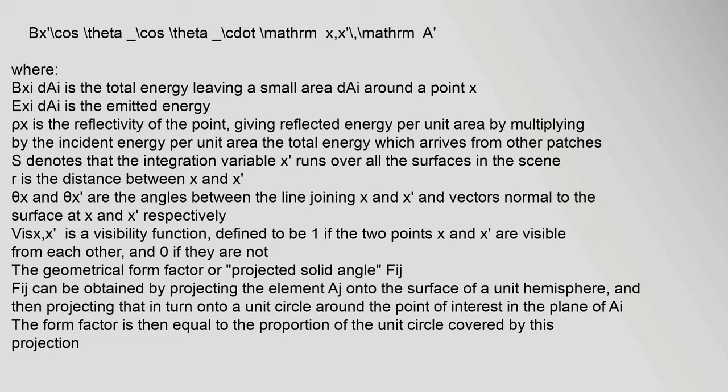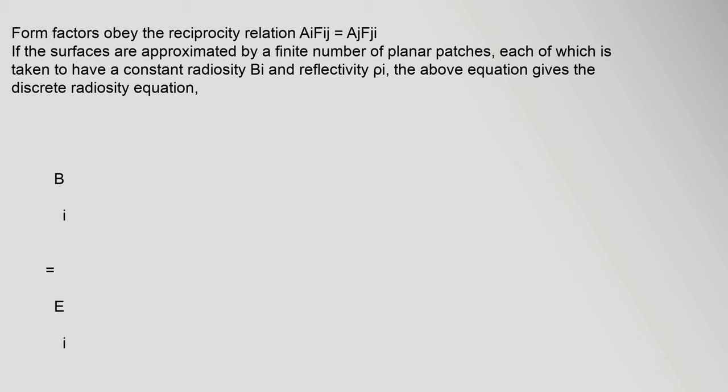The geometrical form factor F_ij can be obtained by projecting element A_j onto the surface of a unit hemisphere and then projecting that in turn onto a unit circle around the point of interest in the plane of i. The form factor is then equal to the proportion of the unit circle covered by this projection. Form factors obey the reciprocity relation A_i F_ij = A_j F_ji. If the surfaces are approximated by a finite number of planar patches each taken to have constant radiosity B_i and reflectivity ρ_i, the discrete radiosity equation is: B_i = E_i + ρ_i Σ_j F_ij B_j.